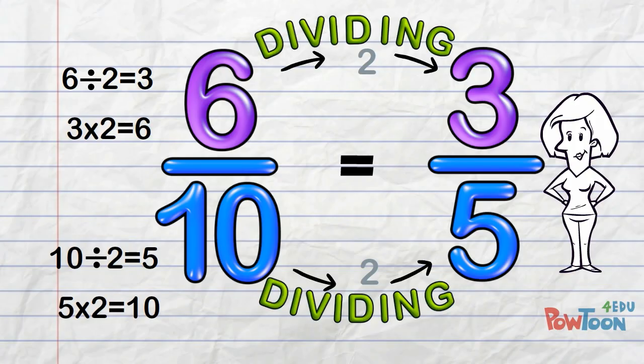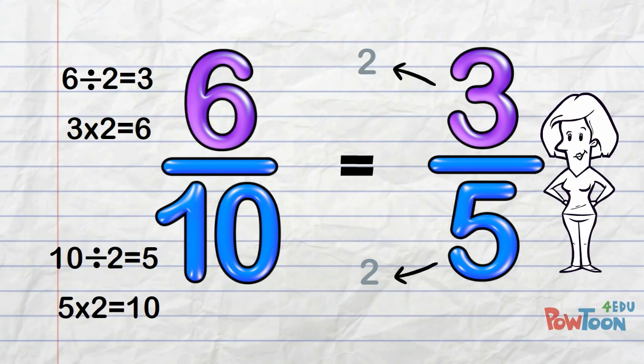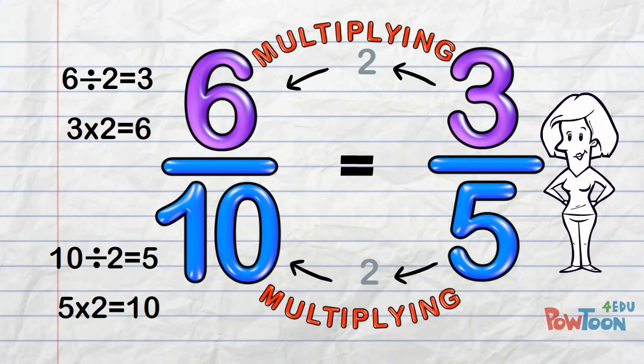If you work through this kind of problem from larger number to smaller number, you are dividing. Here, that means we work from left to right. If you work from smaller number to larger number, you are multiplying. And here, that means we're working from right to left.